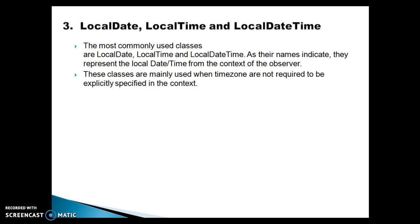A first advantage of the new API is clarity — the API is very clear, concise, and easy to understand. It does not have a lot of inconsistencies found in the old library, such as field numbering in Calendar where months are zero-based but days of the week are one-based. Also, the old date library included only a single time representation class, java.util.Date, which despite its name is actually a timestamp — it only stores the number of milliseconds elapsed since the Unix epoch.